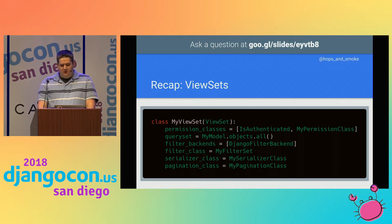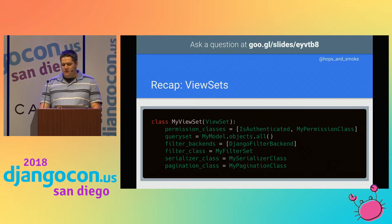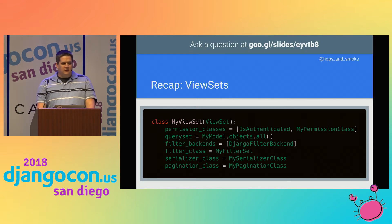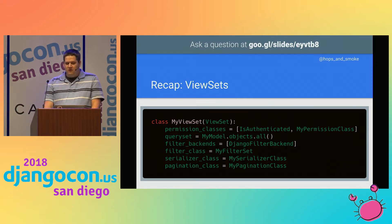View sets are extremely powerful combinations of generic classes that provide general-purpose methods for basic API access. You get auth, access control, query set generation, serializer selection, and filtering, all just by providing class attributes. If your first exposure to DRF was Phil's tutorial on Sunday, just combine the list and detail generic classes you used during that tutorial and that gives you the concept behind the view set. It also includes very simple create, retrieve, update, and destroy actions — known as CRUD — that will serve the majority of your view needs really well.